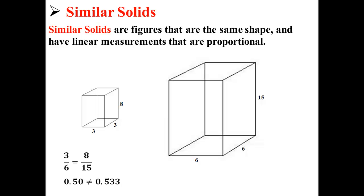To check if they're similar solids, we select side pairs and see if they're equal. If they're not equal, then we do not have similar solids.